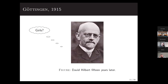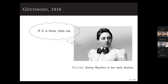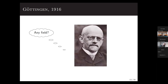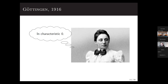Hilbert had to wait about 15 years. Back at his home institution in Göttingen, a newly appointed, very talented young researcher had just joined the faculty — and that mathematician happened to be a woman, going by the name of Emmy Noether. Noether gave an answer to Hilbert's problem: if the group acting is finite, then the invariants are always finitely generated. However, she could initially prove this only for characteristic zero.